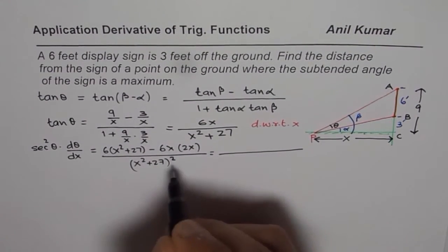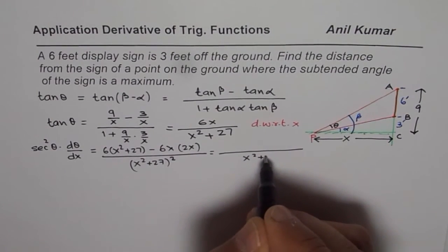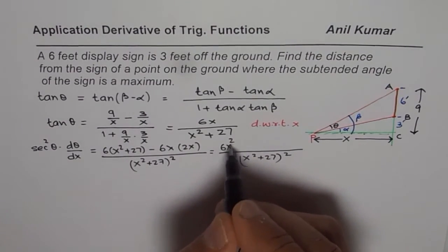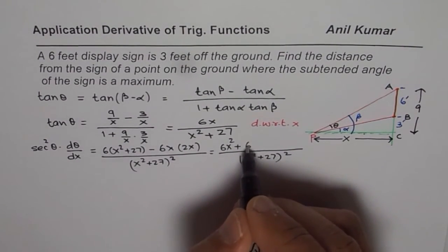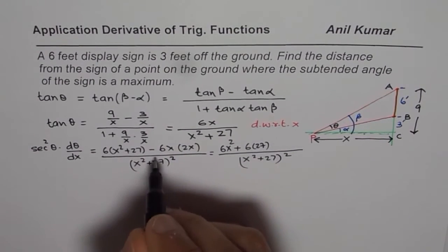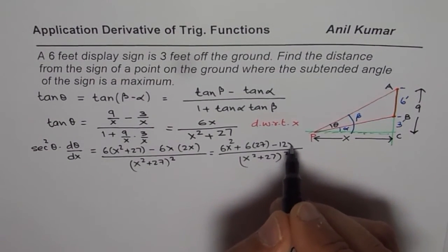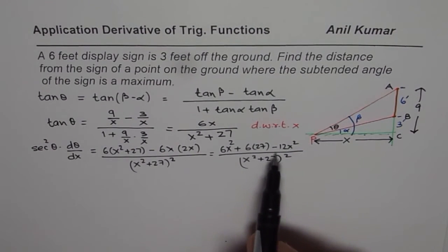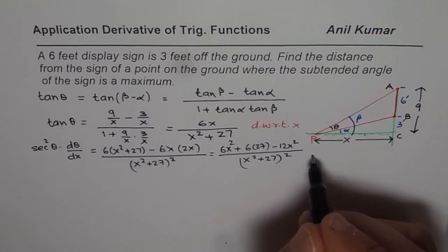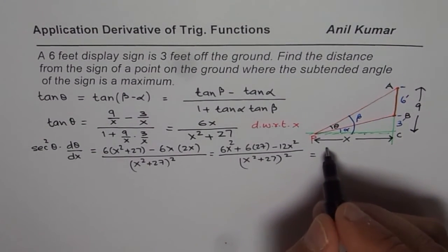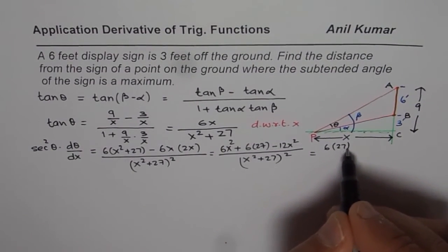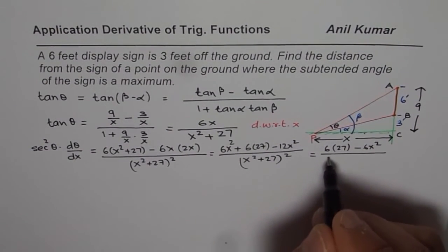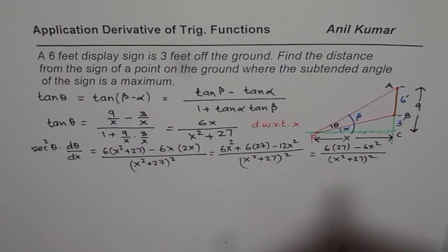Now that could be simplified. We have X square plus 27 whole square. And 6X square plus 6 times 27. I am not multiplying them at present. And here we have minus 12X square. So 6X square minus 12X square is how much? Let me continue here itself. It gives me 6 times 27 minus 6X square in the numerator, right? That is X square plus 27 whole square, right?